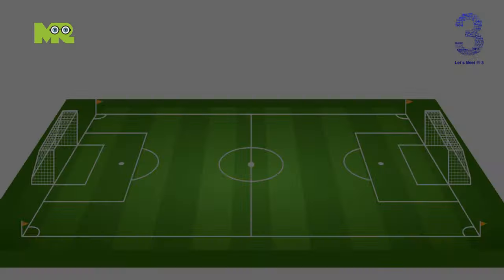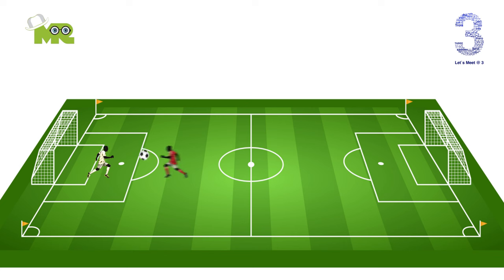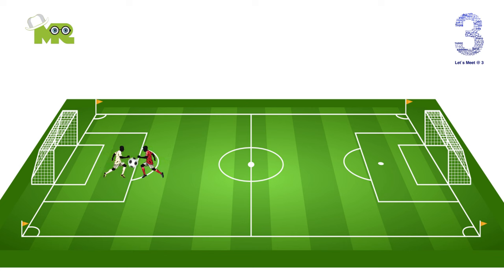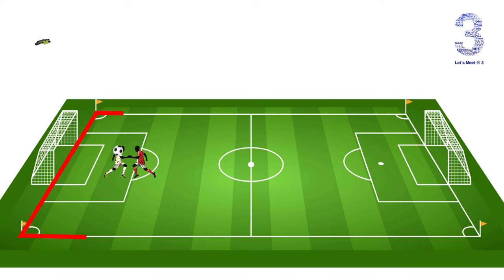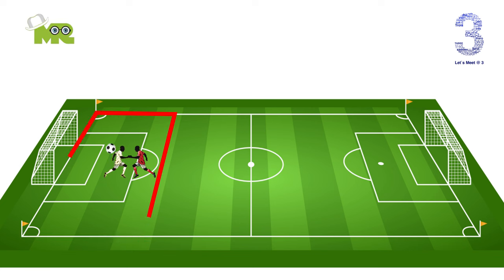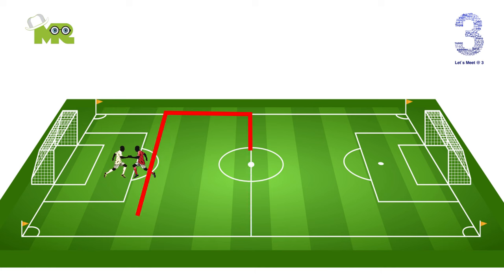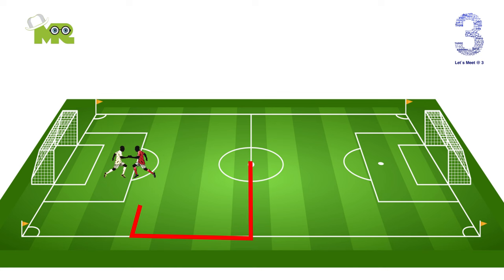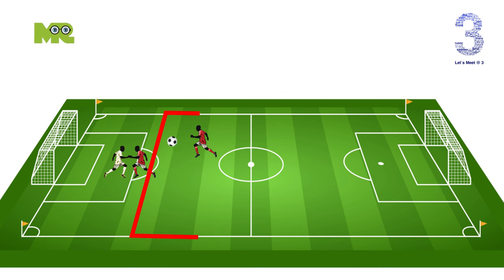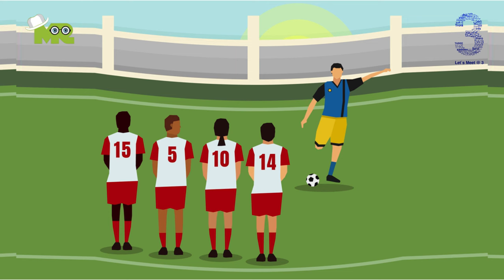Offside can be called when an attacking player is in front of the last defender when the pass is played through to them. The offside area is designed to discourage players from simply hanging around the opponent's goal waiting for a pass. To be onside, they must be placed behind the last defender when the ball is played to them. If the player is in front of the last defender, then he is deemed to be offside and a free kick to the defending team will be called.